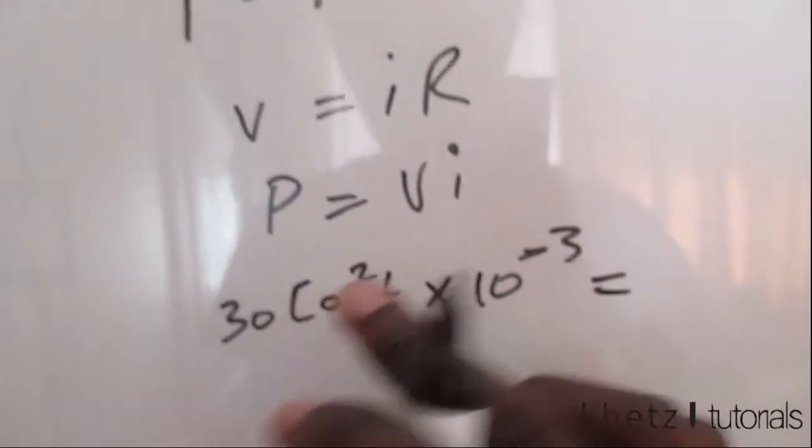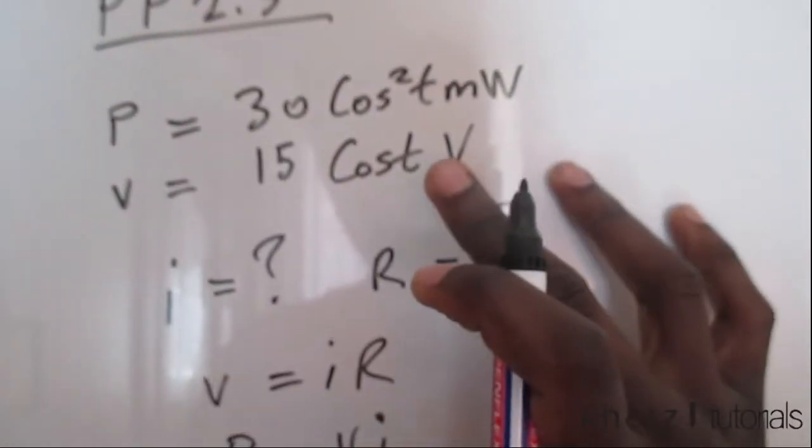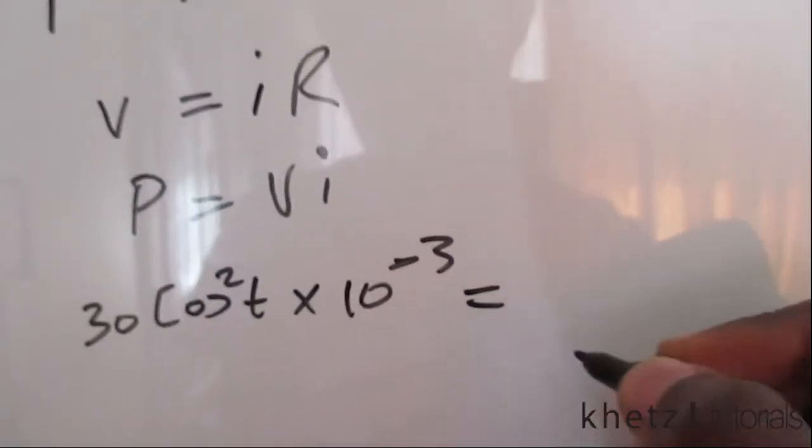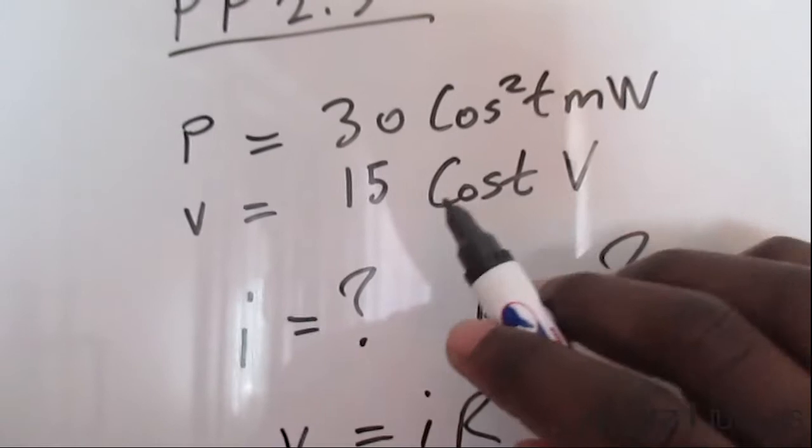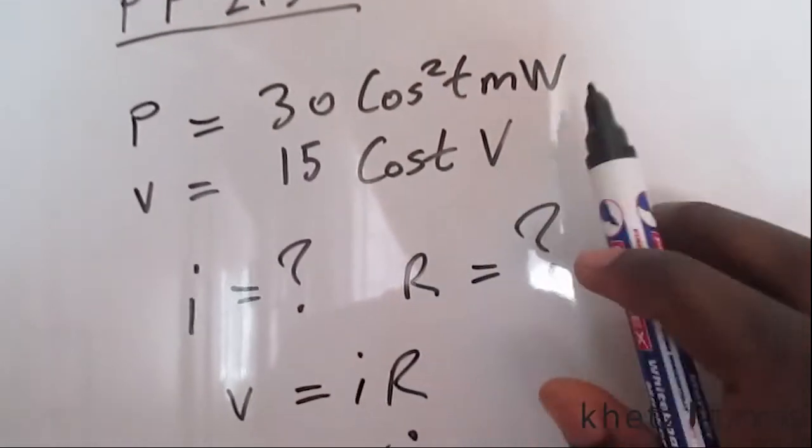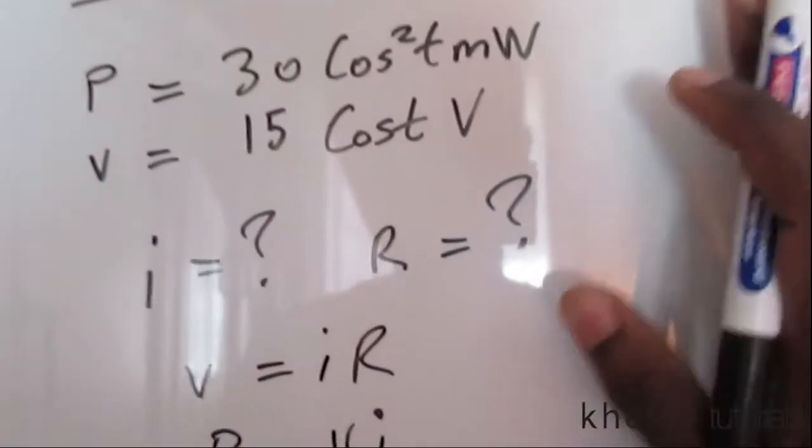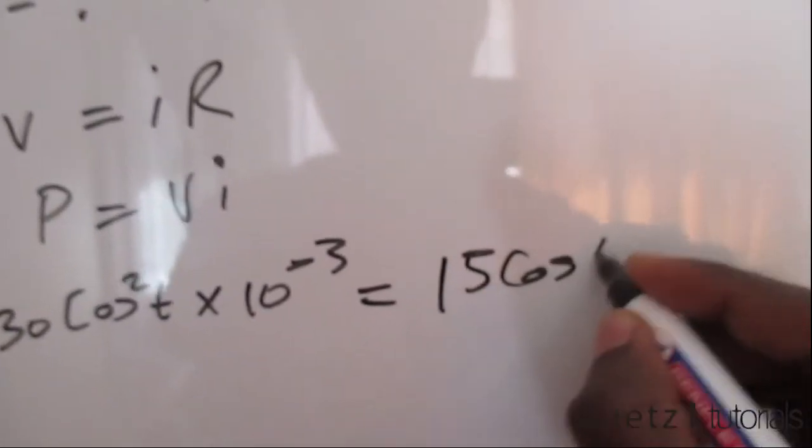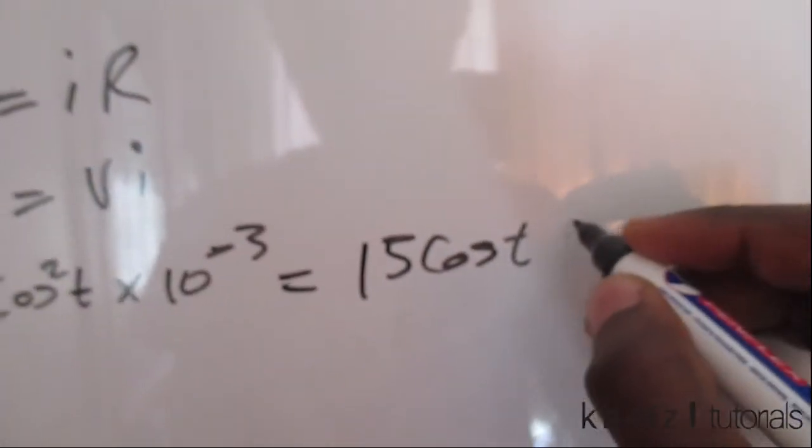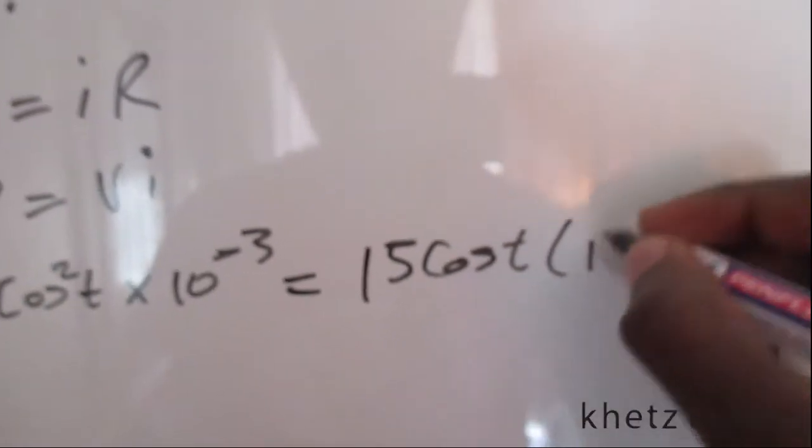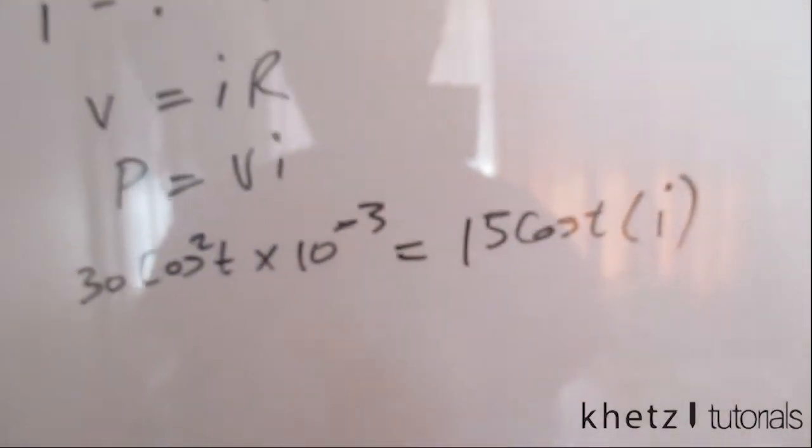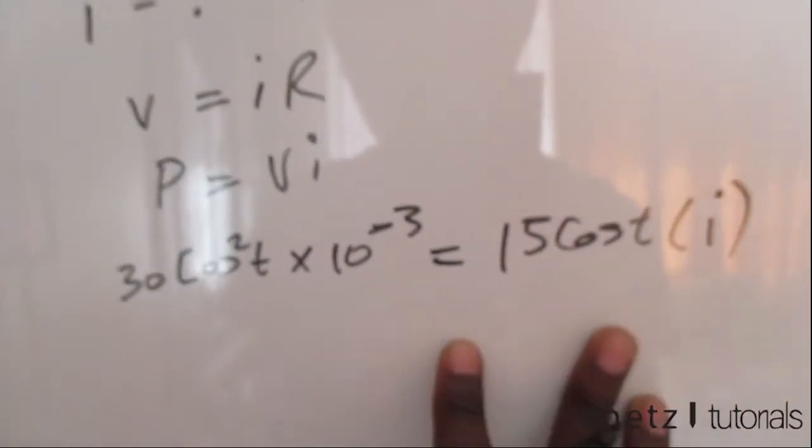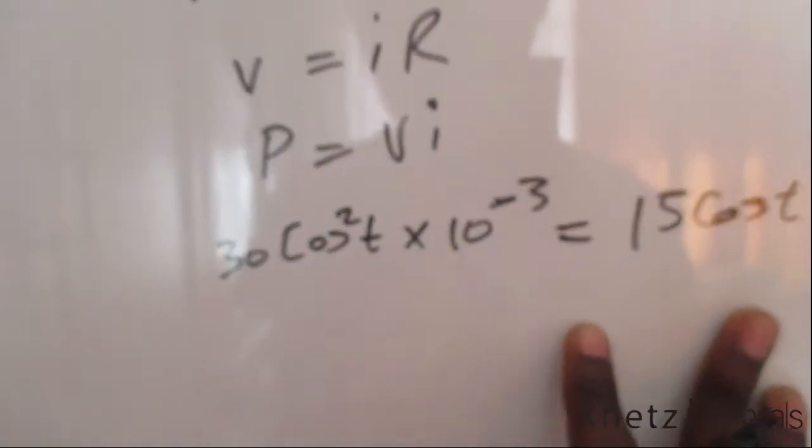Equals V, given to us as 15 cos t volts, so it just stays like that, that's the same as multiplying by 1, so 15 cos t and this unknown variable I. So to find I, just simply manipulate this or divide both sides by 15 cos t.